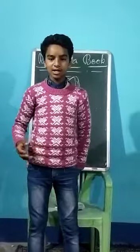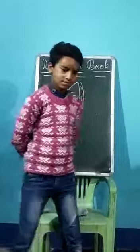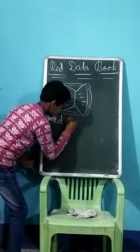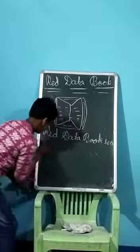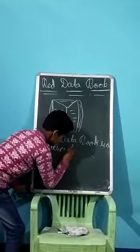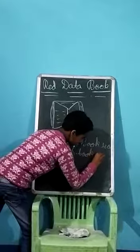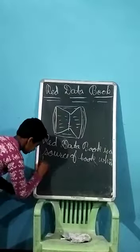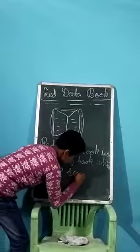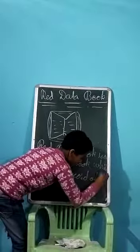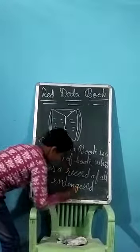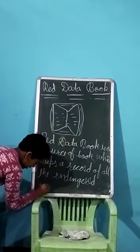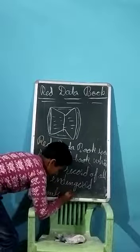Red Data Book is a source of book which gives a record of all the endangered animals or plants. Red Data Book keeps a record of all the endangered animals or plants.